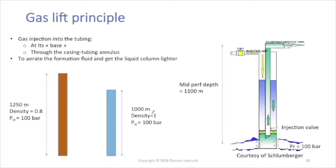if my fluid density is equal to 1, then this 100 bar of reservoir pressure will be equivalent to a 1000 meter hydrostatic column.